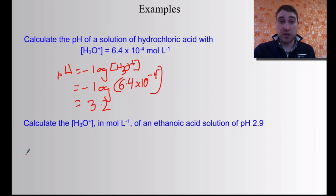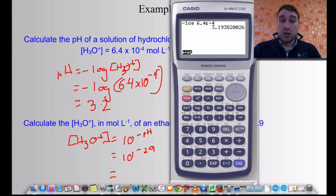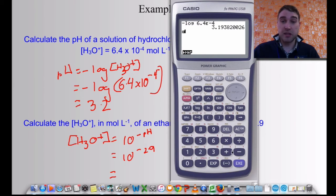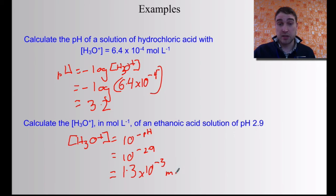The next question: calculate the hydronium ion concentration in moles per litre of an ethanoic acid solution of pH 2.9. Now we use the inverse calculation: [H₃O⁺] = 10^(−pH), so that's 10^(−2.9). On the calculator, press shift and log — the inverse log button — then enter minus 2.9. Make sure you remember the minus sign. That gives 1.25 × 10⁻³, which rounds to 1.3 × 10⁻³ mol/L.